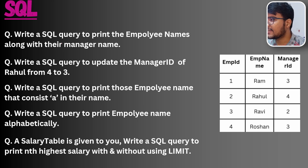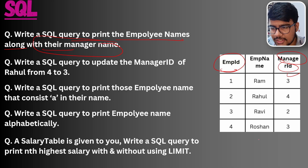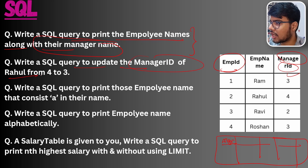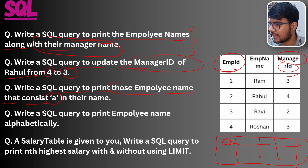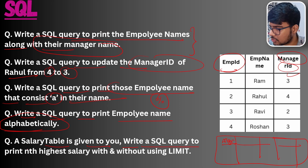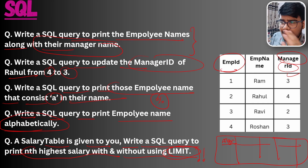Let's hop on to the SQL topic. Write an SQL query to print employee names along with their manager names — you have a manager ID which would be a foreign key referencing another table with manager names. Write an SQL query to update the manager ID of Rahul from 4 to 3 using UPDATE table SET. Write a query to print employee names that contain 'a' in their name using LIKE with the percentage symbol. Write a query to print employee names alphabetically using ORDER BY ascending or descending. Also, given a salary table, write an SQL query to print the nth highest salary without using LIMIT — this is a very new question we found.